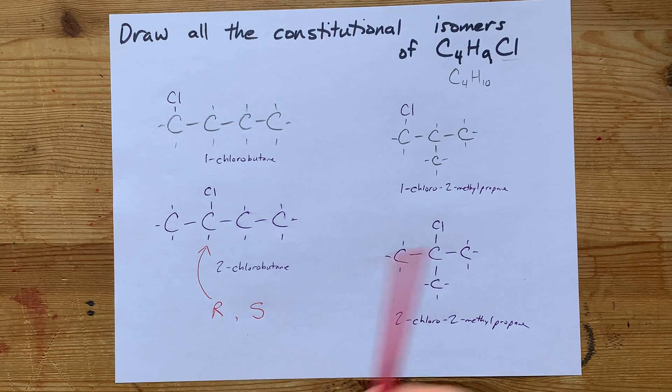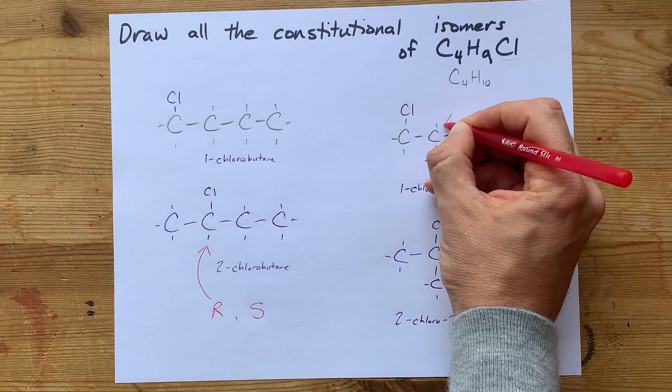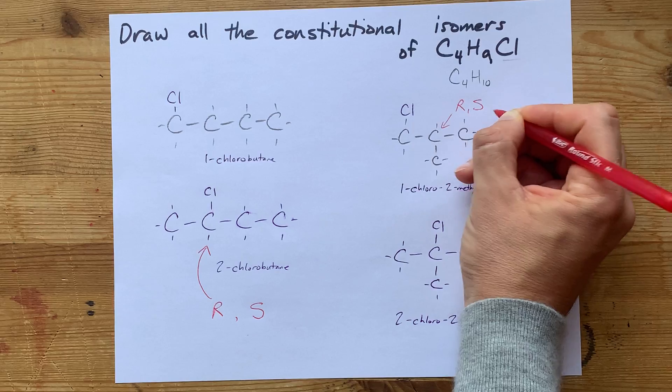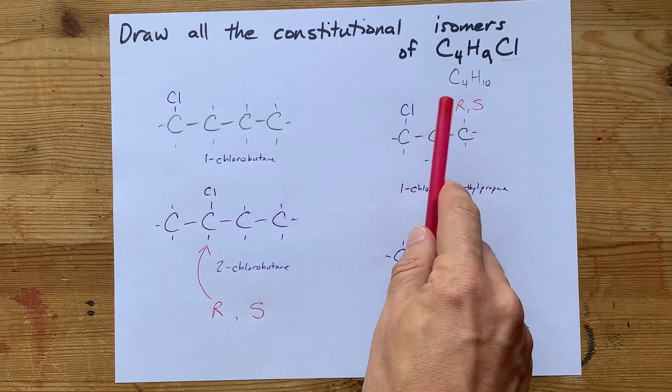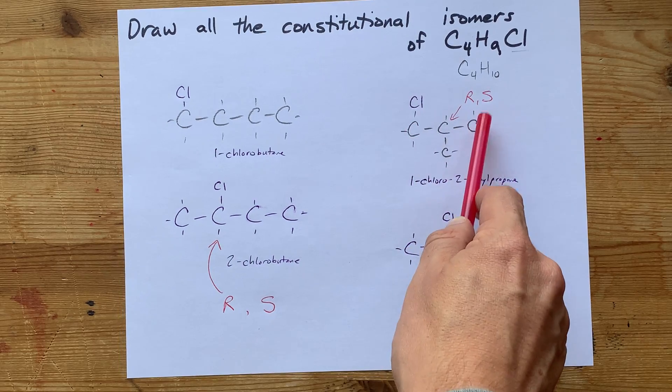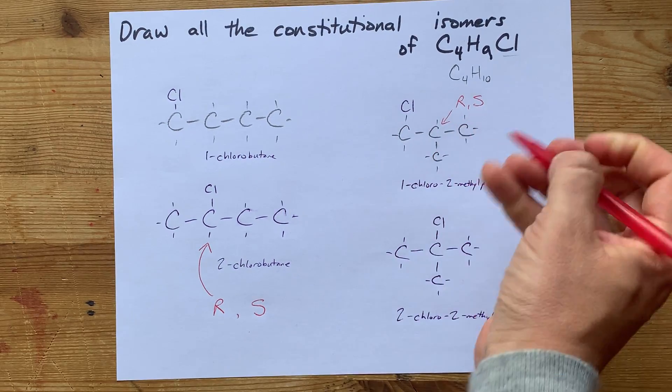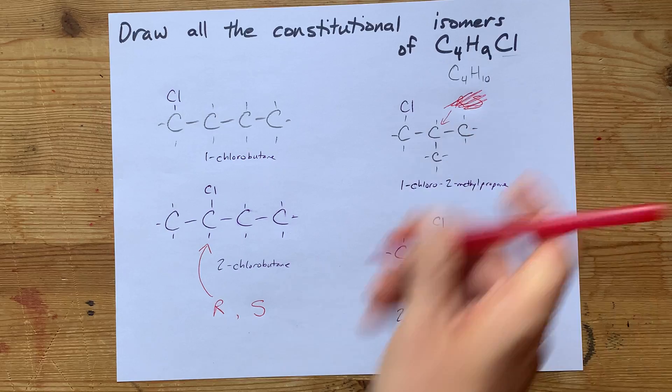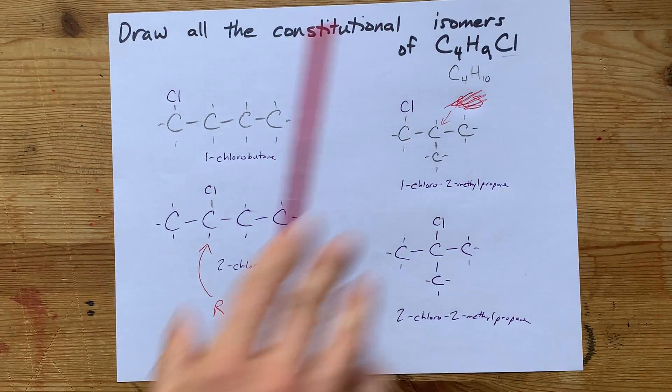But this is the only one here that's chiral. Oh wait, wait, wait, wait. This one also has R and S isomers, and I know that because that carbon has an H and a chloromethane and a meth... Oh no. Those are... No. Never mind. That's not chiral at all. I was right the original time.